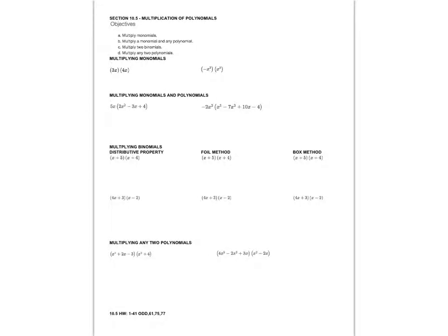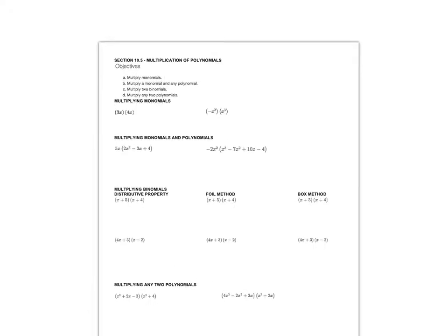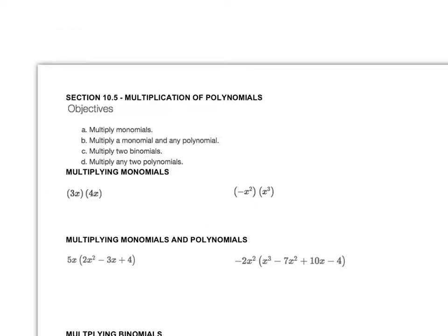Hello and welcome back to the Math 050 notes. We're talking about section 10.5. This is one of my favorite sections. What we're going to be doing is multiplying polynomials. So we're going to multiply monomials together first, then a monomial times any polynomial, then two binomials, and finally any two polynomials.